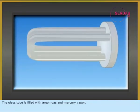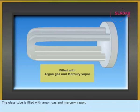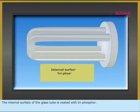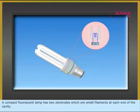The glass tube is filled with argon gas and mercury vapor. The internal surface of the glass tube is coated with a triphosphor. A compact fluorescent lamp has two electrodes, which are small filaments at each end of the cavity.